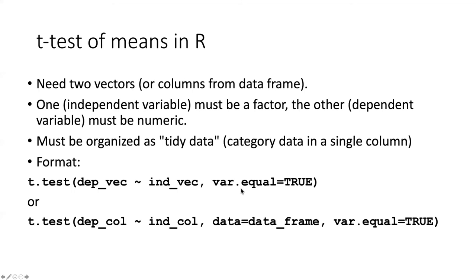If the data are part of a data frame, then we want to add an additional argument, the data equals, and then the name of the data frame. That allows us to avoid having to include the name of the data frame when we specify the columns. We can just simply list the columns here. Alternatively, we could leave that out and specifically list what the data frame is that the columns are from by using the dollar sign notation.